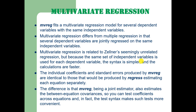The difference is that mvreg, being a joint estimator, also estimates the between-equation covariances so that we can test coefficients across equations, and in fact the test syntax makes such tests more convenient.